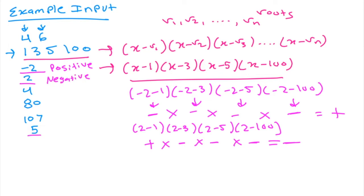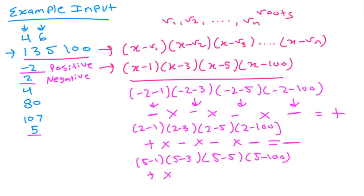Let's look at the final test case at the value of 5. If we plug in 5, we get (5-1)(5-3)(5-5)(5-100), which gives 4 times 2 times 0 times -95. Since one factor is zero, the result is 0, so in this case we would just print out 0.